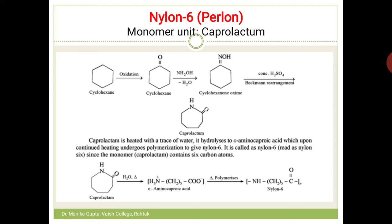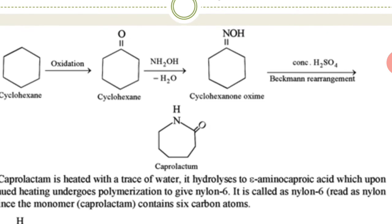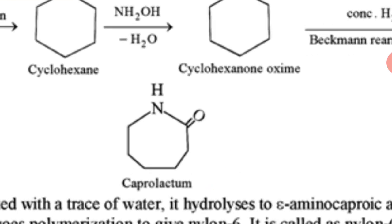The monomer unit of nylon 6 is caprolactam. Caprolactam is prepared from cyclohexane: first oxidize cyclohexane to cyclohexanone, then treat cyclohexanone with hydroxylamine to form an oxime, then treat the oxime with concentrated H₂SO₄, causing Beckmann's rearrangement. The NOH group shifts in the ring, and you get caprolactam.